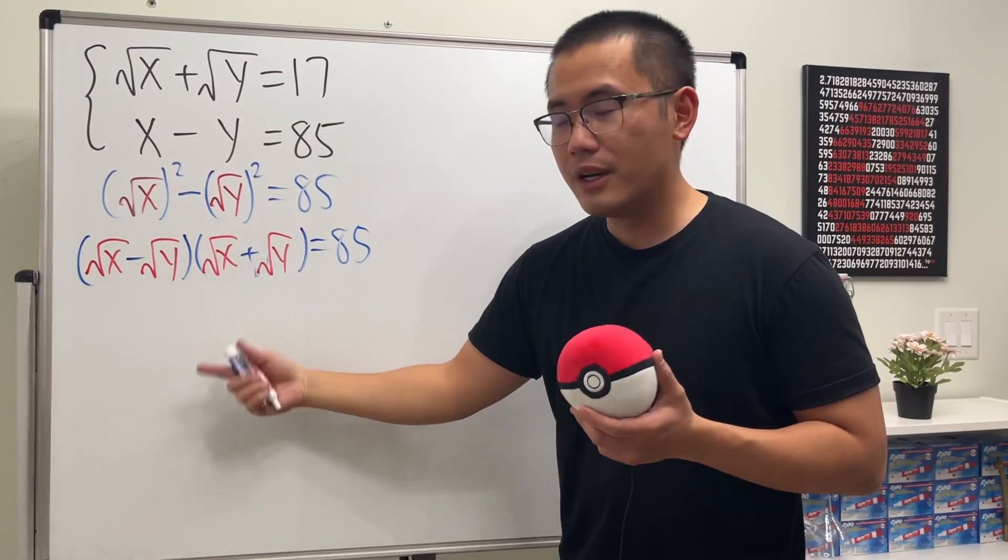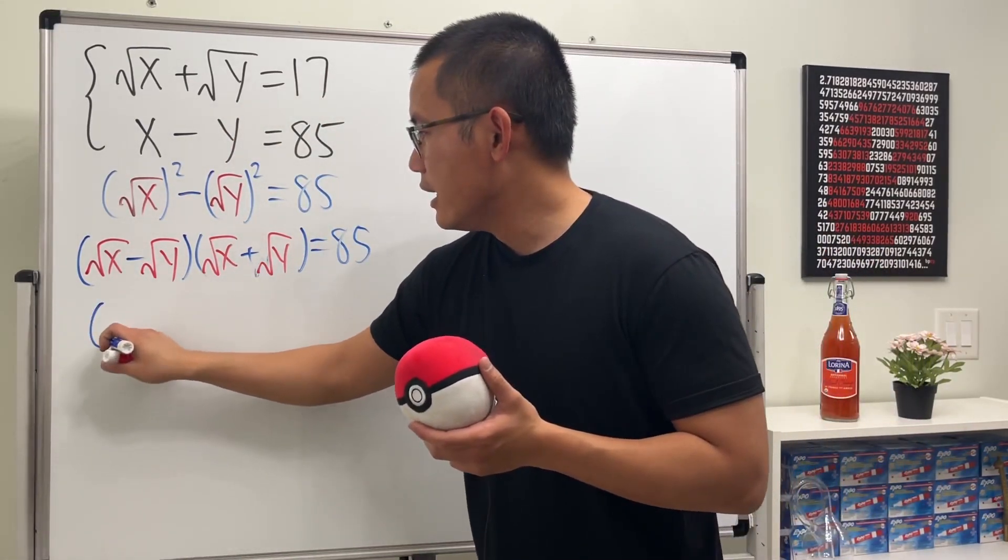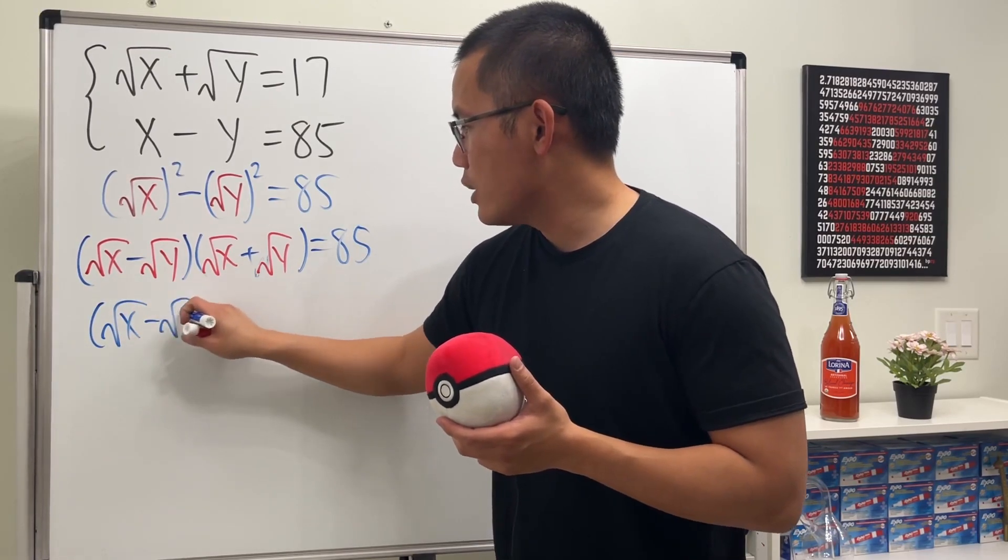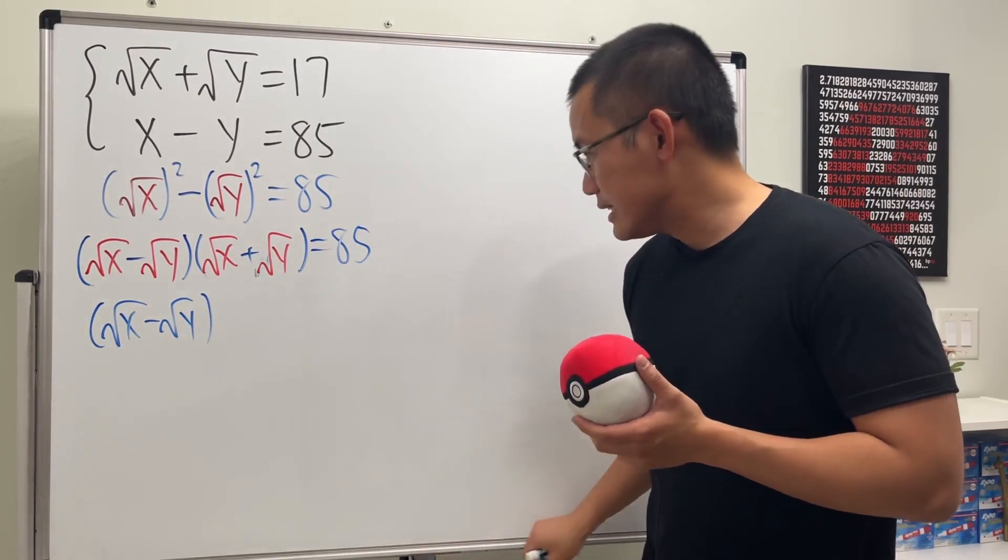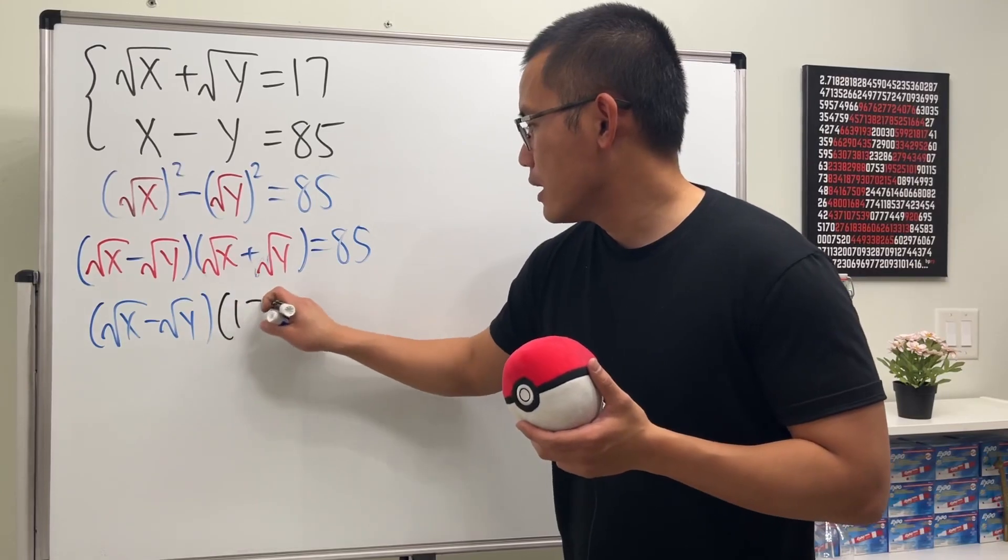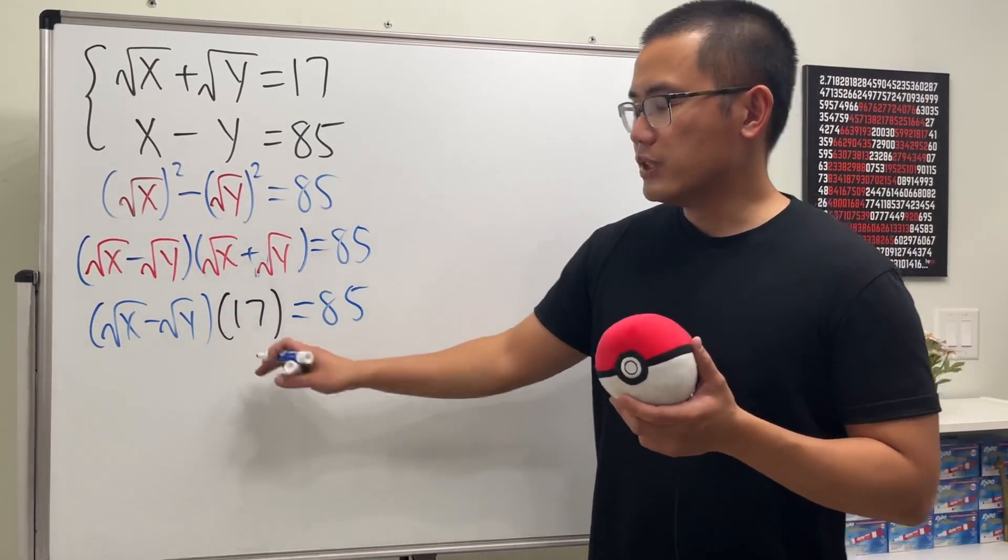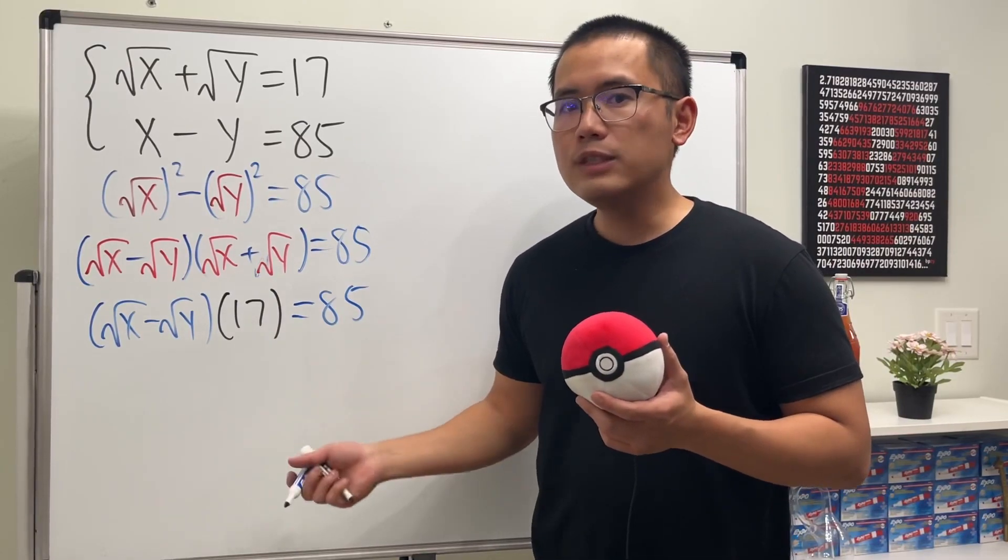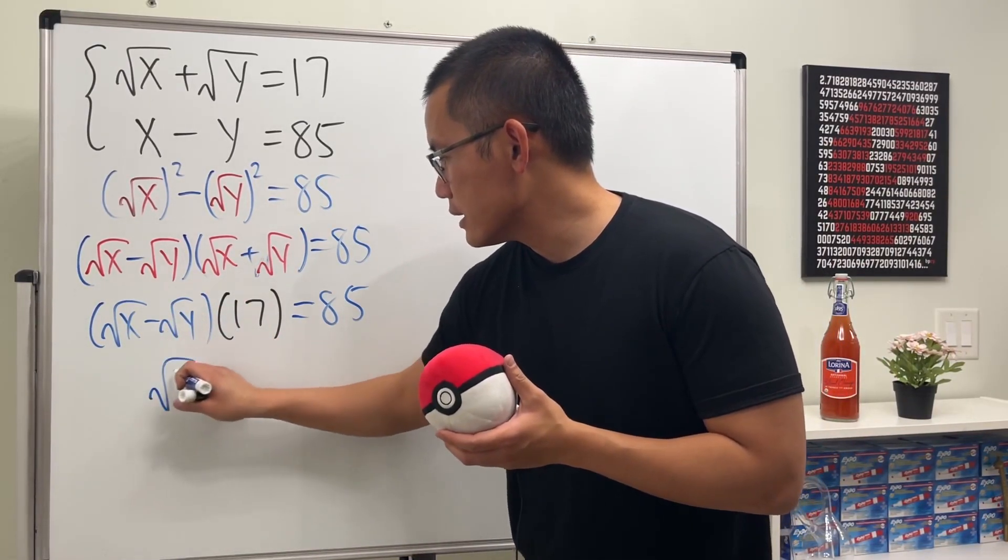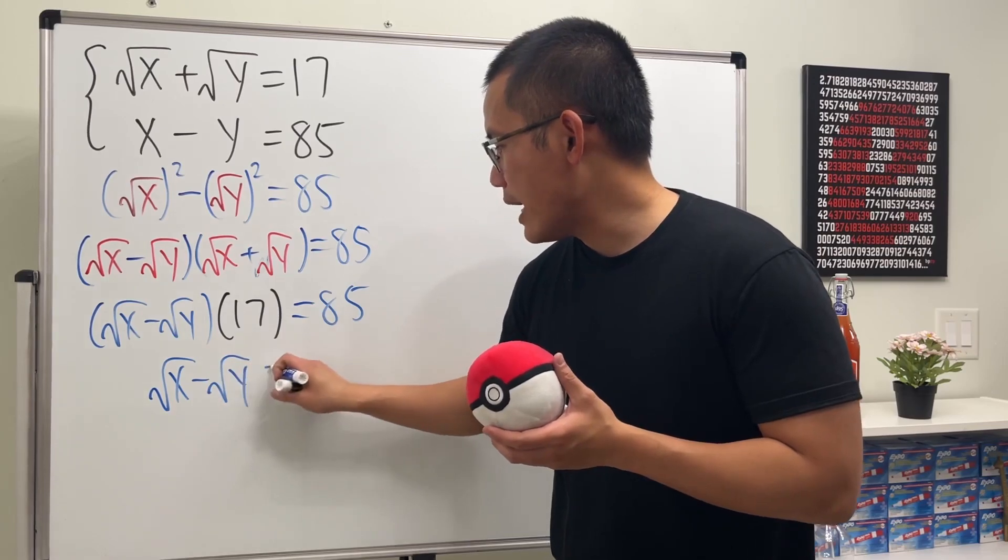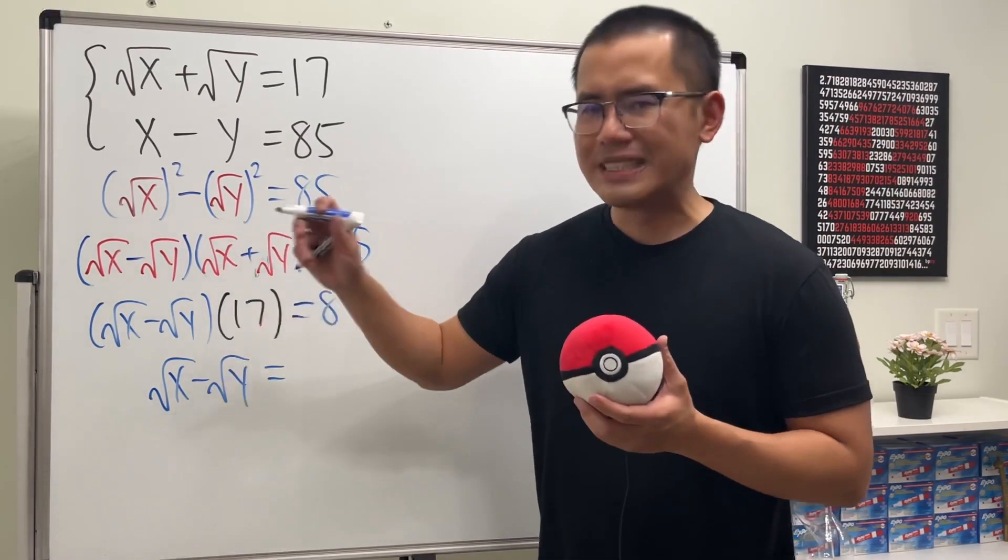That's exactly right here. So that means we can just say square root of x minus square root of y times 17 is equal to 85. And of course we can just divide the 17 on both sides, and this will give us square root of x minus square root of y being equal to 85 divided by 17, that is equal to 5. Very nice.